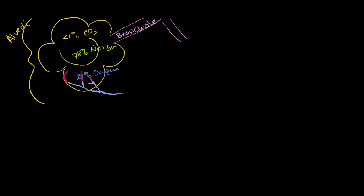Once the blood is red, it has its oxygen and is ready to go back to the heart. Something that goes away from the heart is an artery — 'A' for away, artery. And something going towards the heart is a vein.